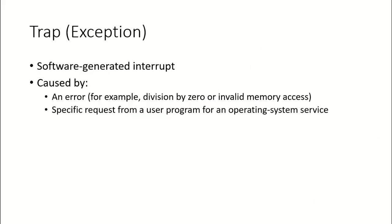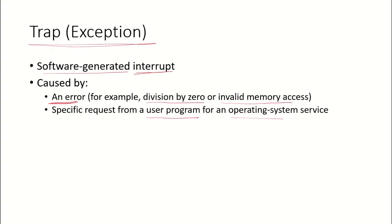Apart from interrupts received from hardware devices, there is another kind of signal sent by software, known as traps. These are software-generated interrupts caused either by an error in the program — like a divide by zero or an invalid memory access — or by a specific request from a user program that wants an operating system service, which is made through a system call.